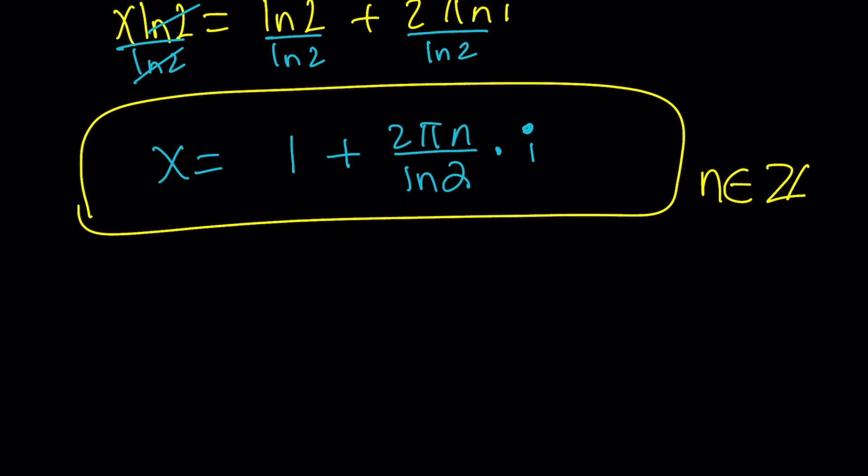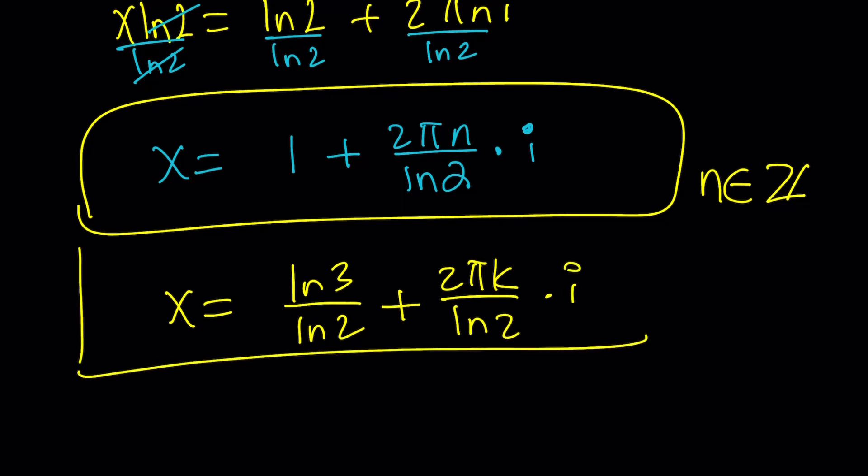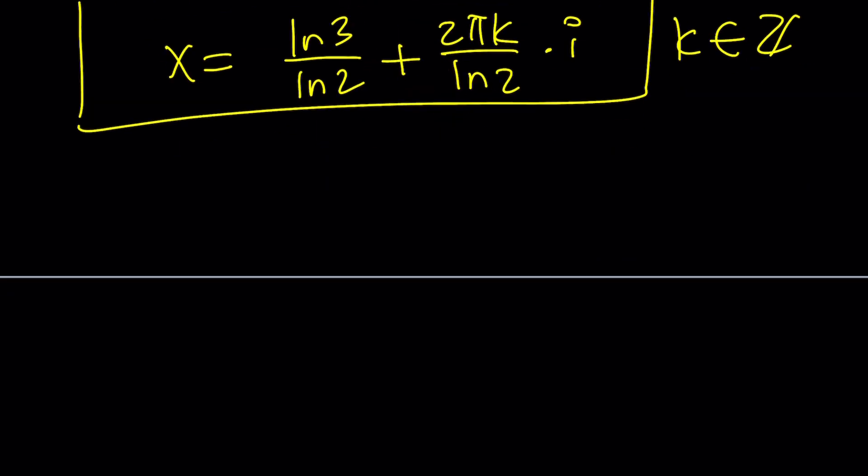And, again, before I forget, n is an integer. So far, so good. And, if you do the same thing with the 3, you're going to get something like ln 3 over ln 2 plus 2πki over ln 2. I mean, 2. Yes, that's what I mean. Not what I wrote. Times i. That's just the other solution and I used a different integer. It doesn't matter because they don't have to be the same. Make sense?